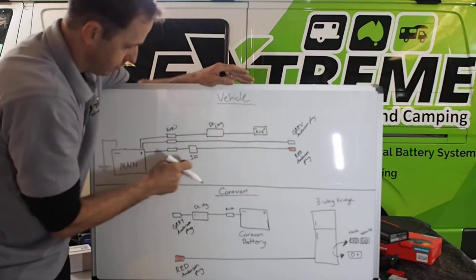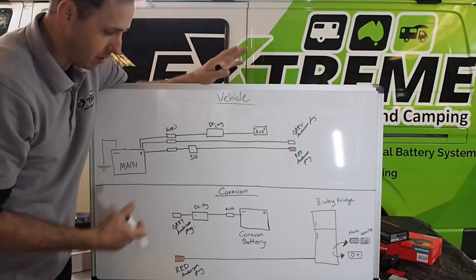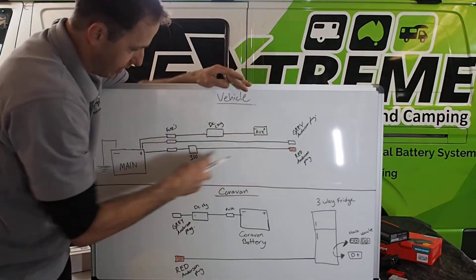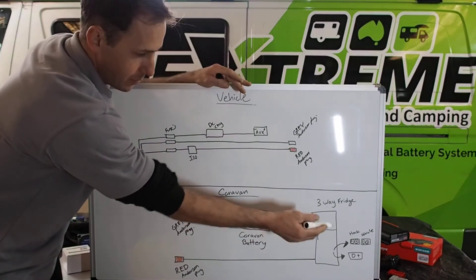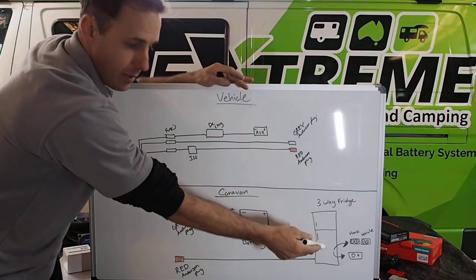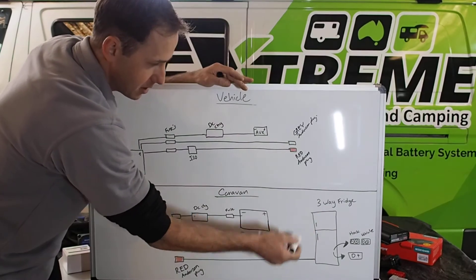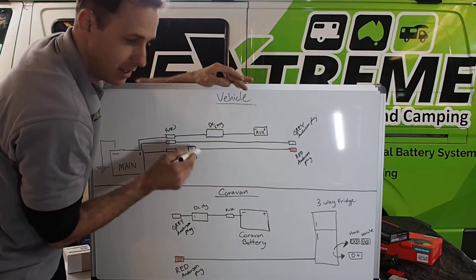And then back to the red one, which hasn't changed. So you've got your red Anderson plug, isolated here, red all the way through to the three-way fridge. Like I said, the D-plus wire on the automatic fridge can be looped over to this vehicle as long as there is an isolator here. It will shut down. If not, you can run the trigger wire separately. It's up to you.